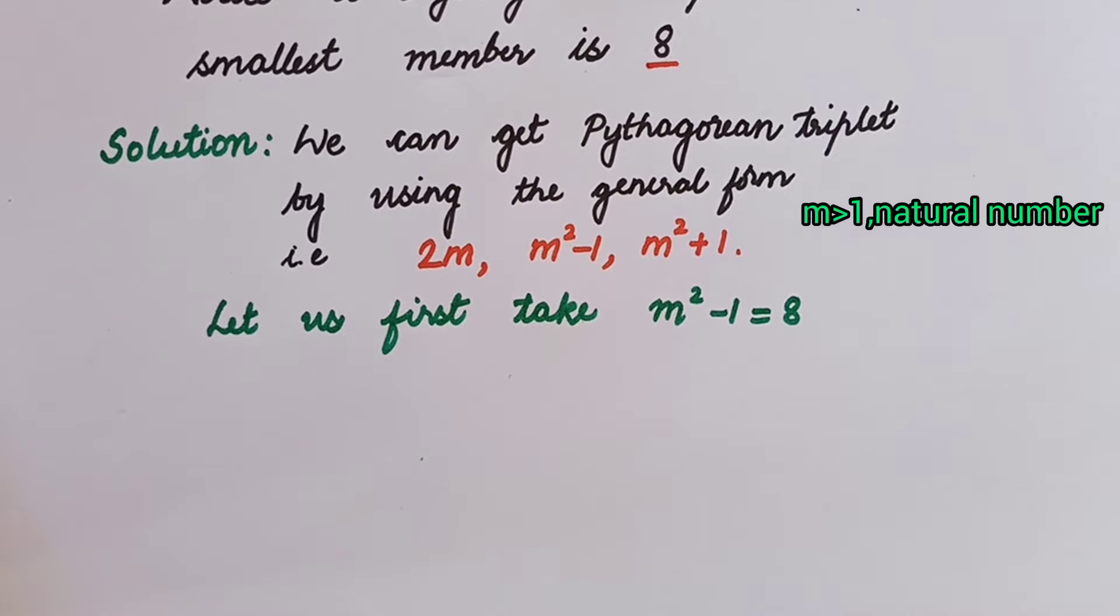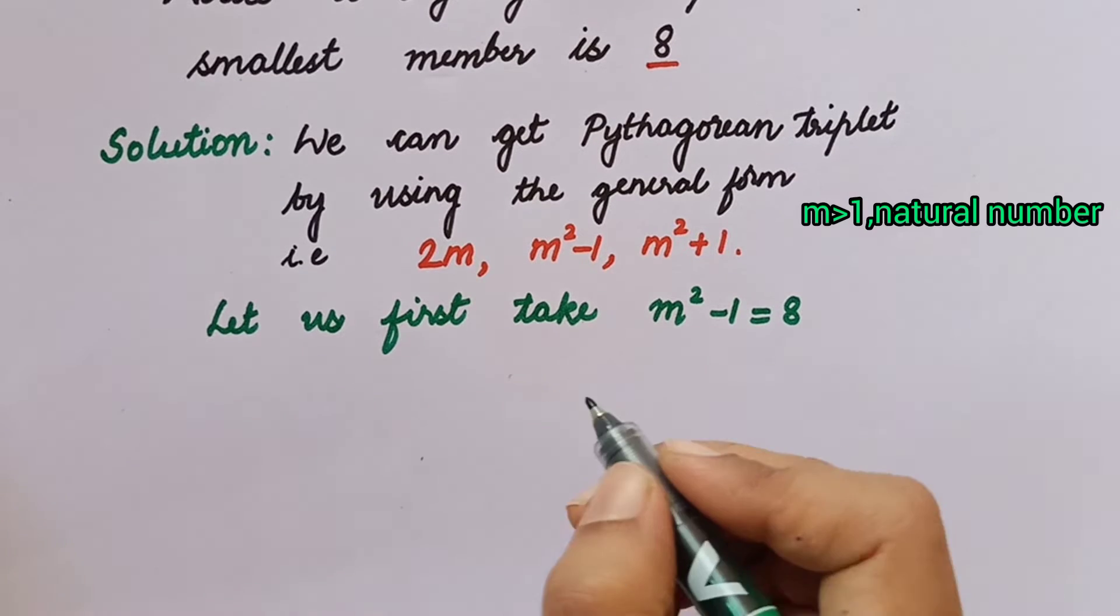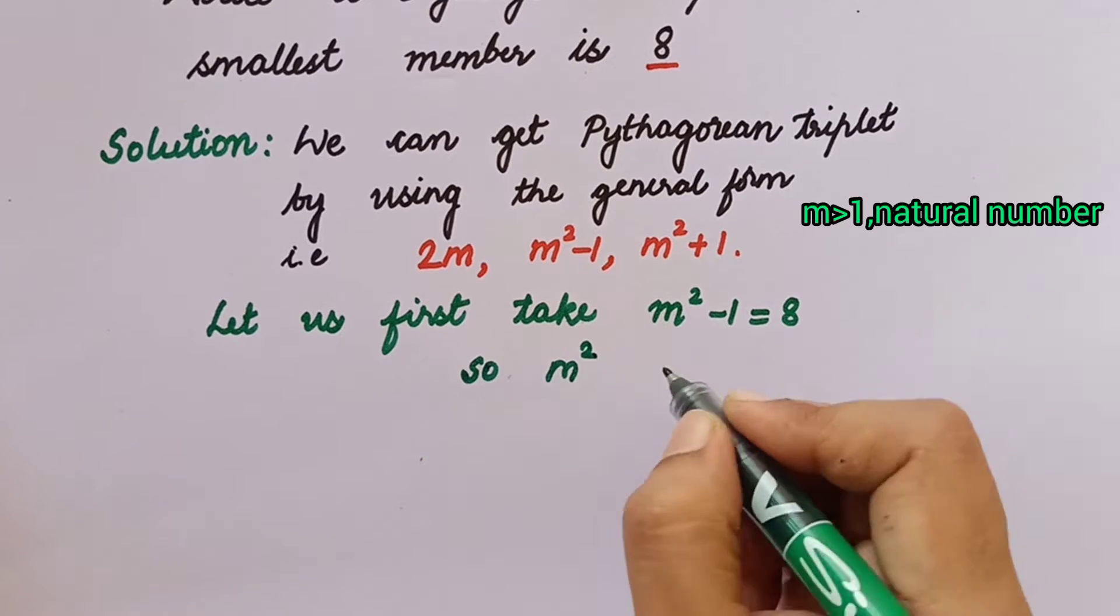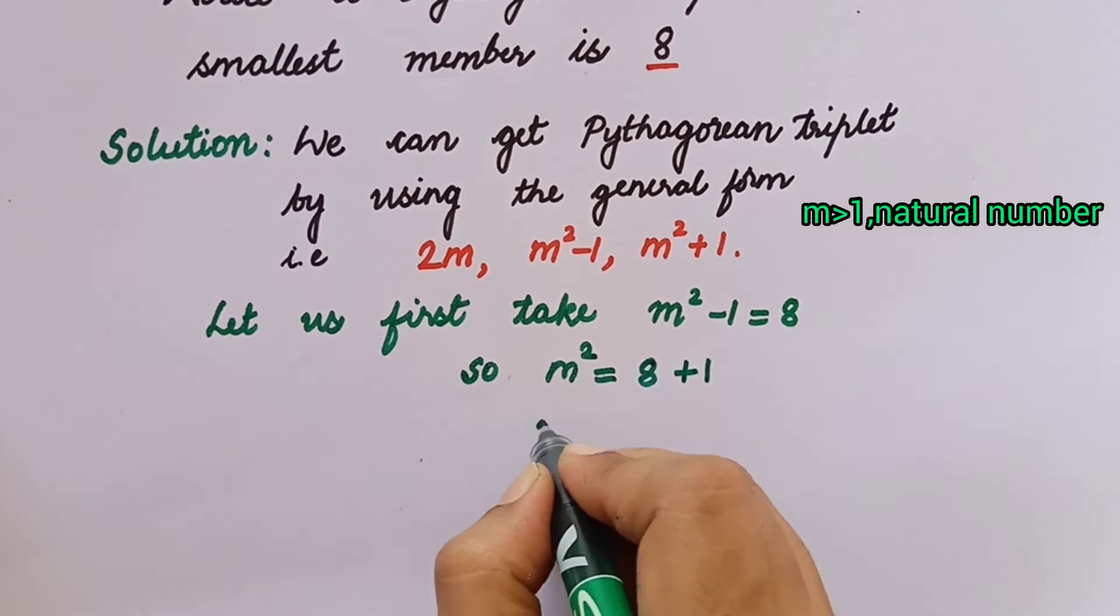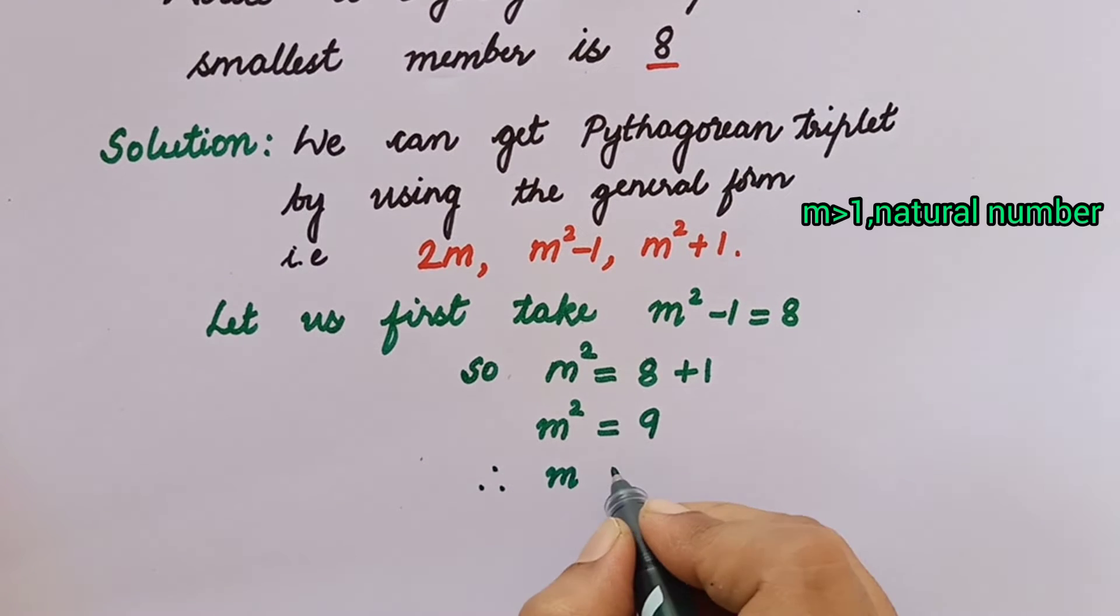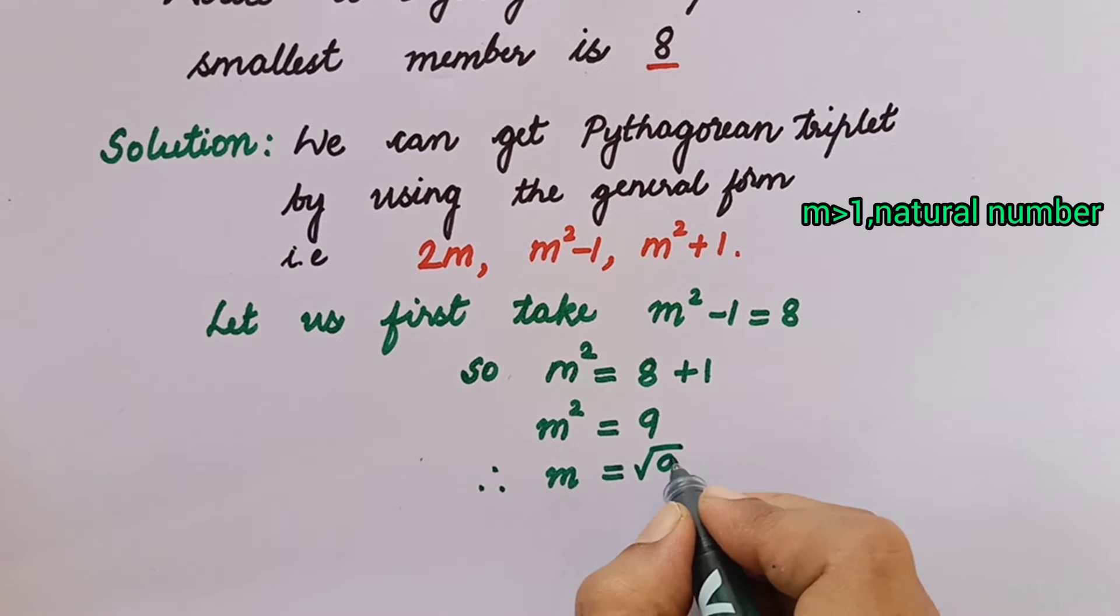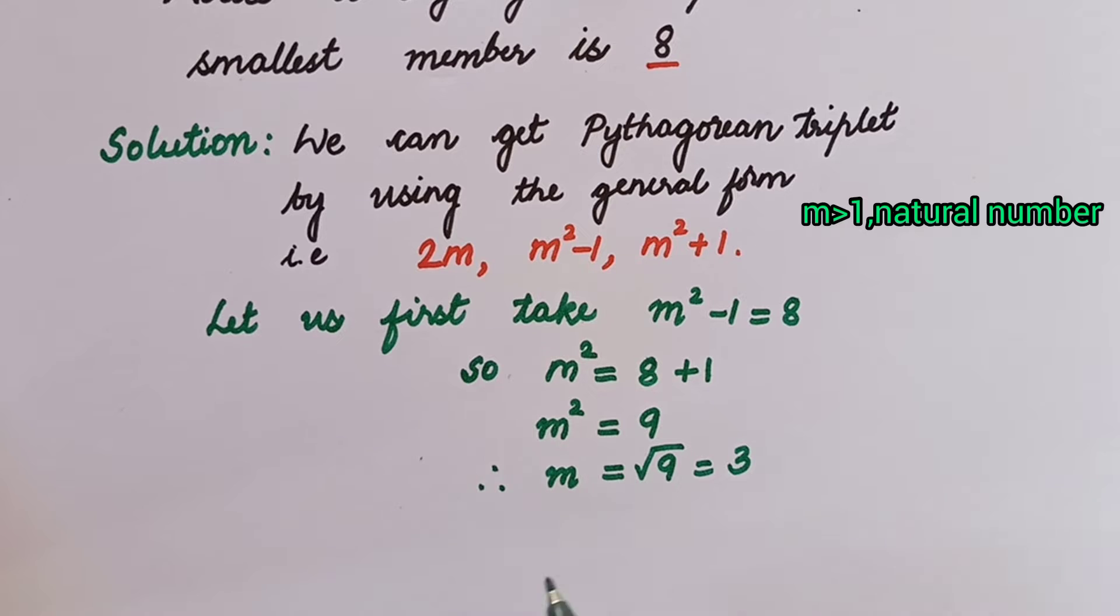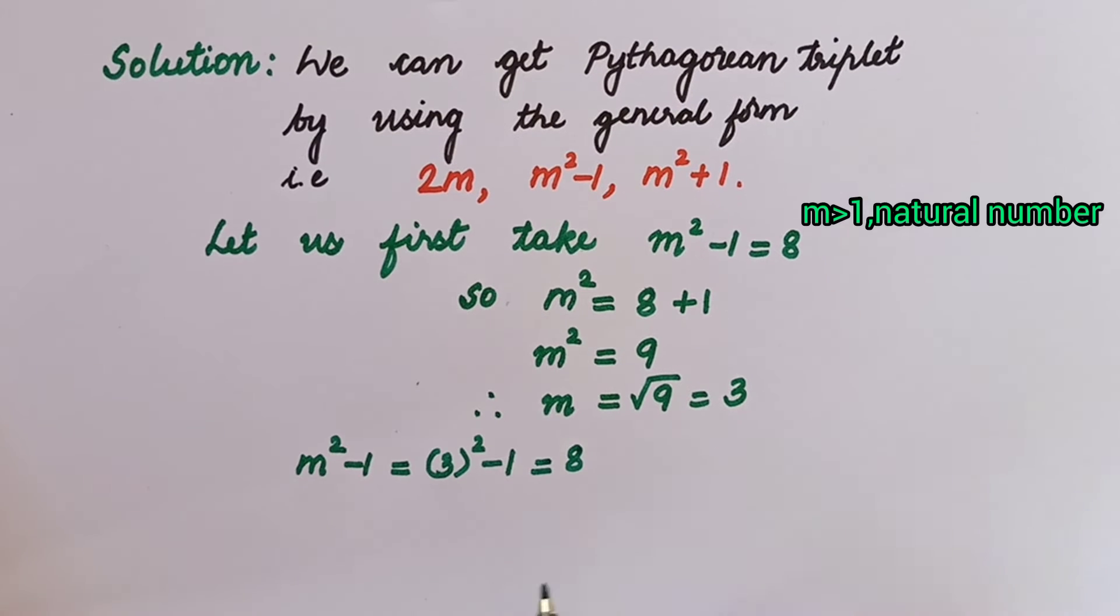M square minus 1 equals 8. We'll solve this equation. We get m square equals 8 plus 1, so m square equals 9 or m equals square root of 9 which is equal to 3. Why not minus 3? Because the condition is m should be a natural number and should be greater than 1. So we take m equals 3. Now we got m square minus 1 equals 3 square minus 1 that is equal to 8.